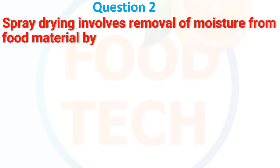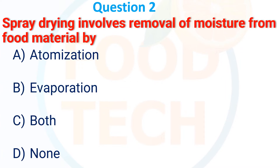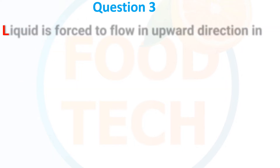Second MCQ: Spray drying involves removal of moisture from the food material by which process? Options: (A) Atomization, (B) Evaporation, (C) Both, and (D) None. The correct answer is C — both atomization and evaporation.